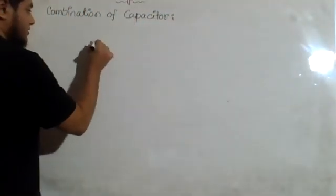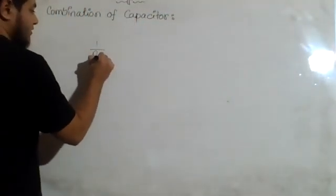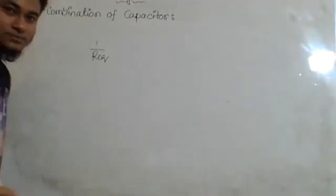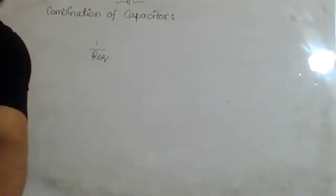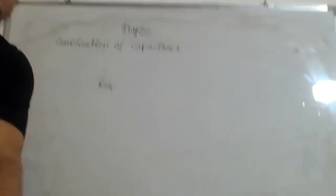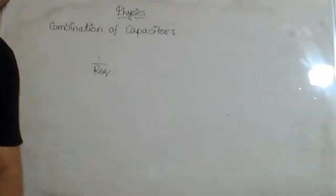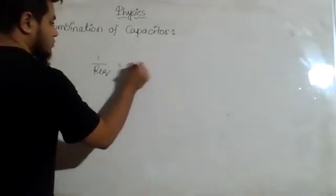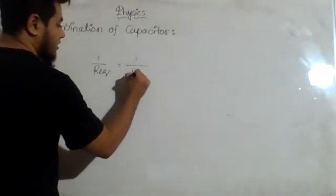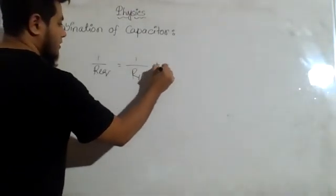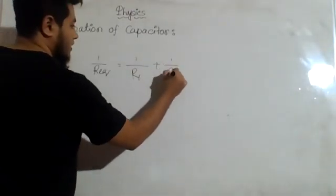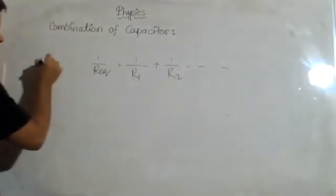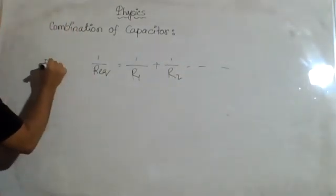The equivalent resistance — for parallel connection it is equal to one by R1 plus one by R2.